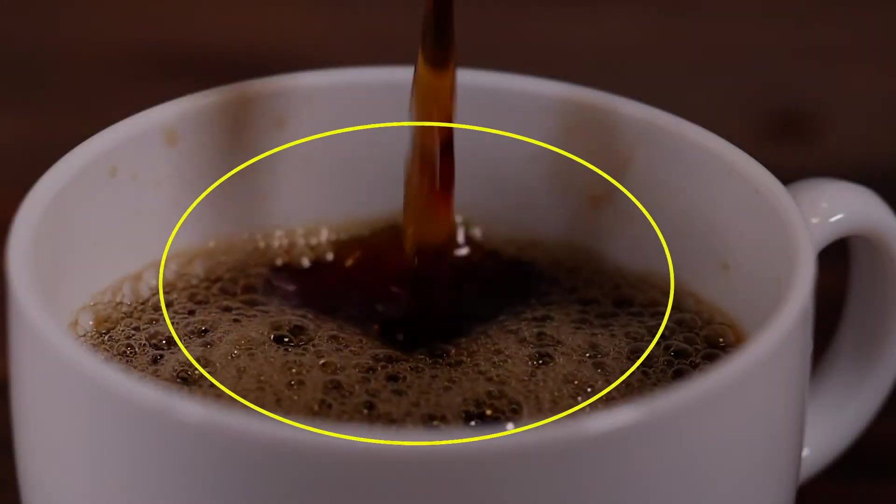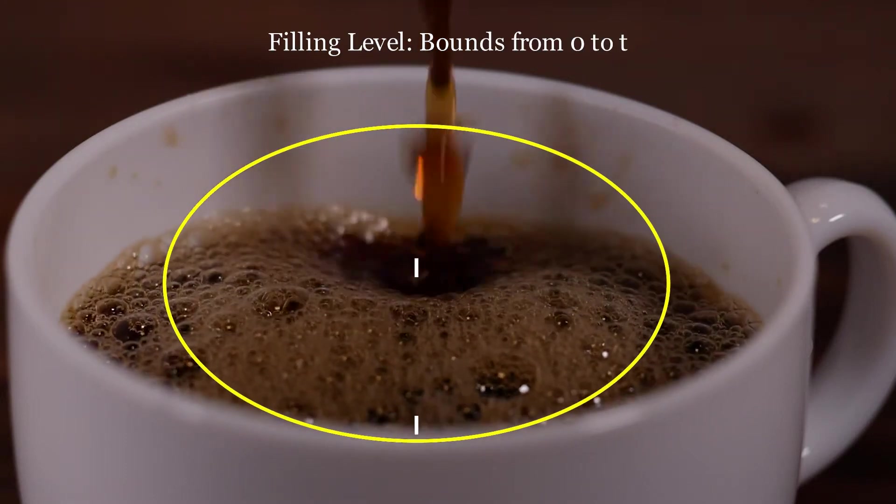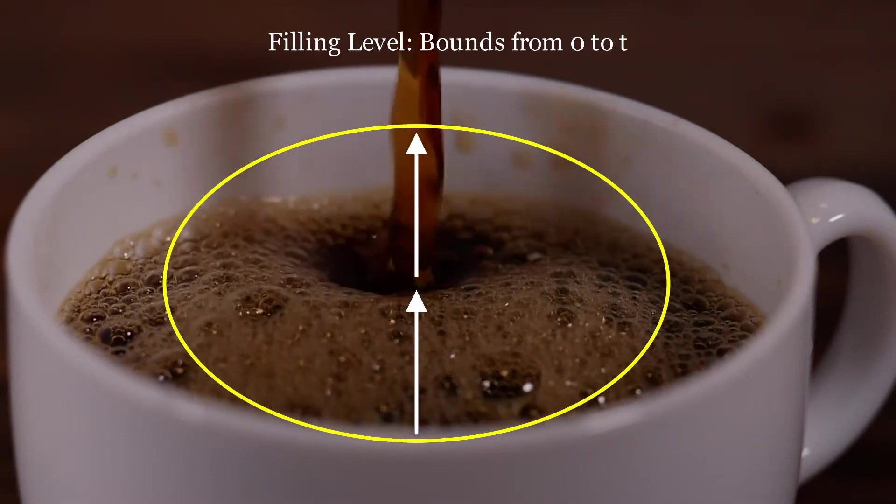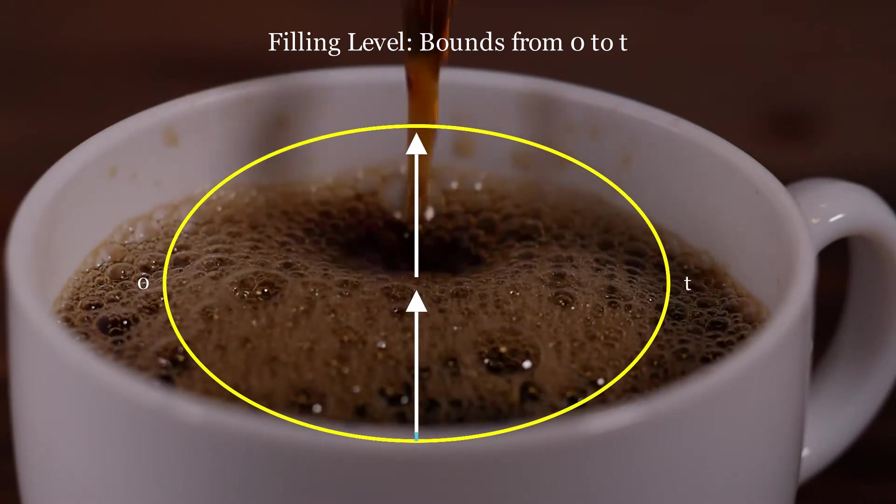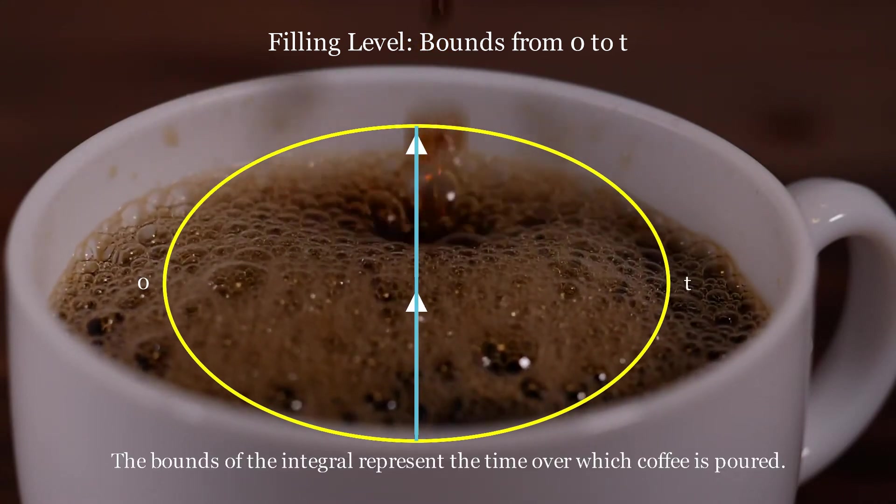Here's the idea. We can take something continuous, like the flow of coffee, and break it into infinitely small slices of time. Each slice contributes a little bit to the total. Add them all together, and we have the exact volume filled. But notice something.